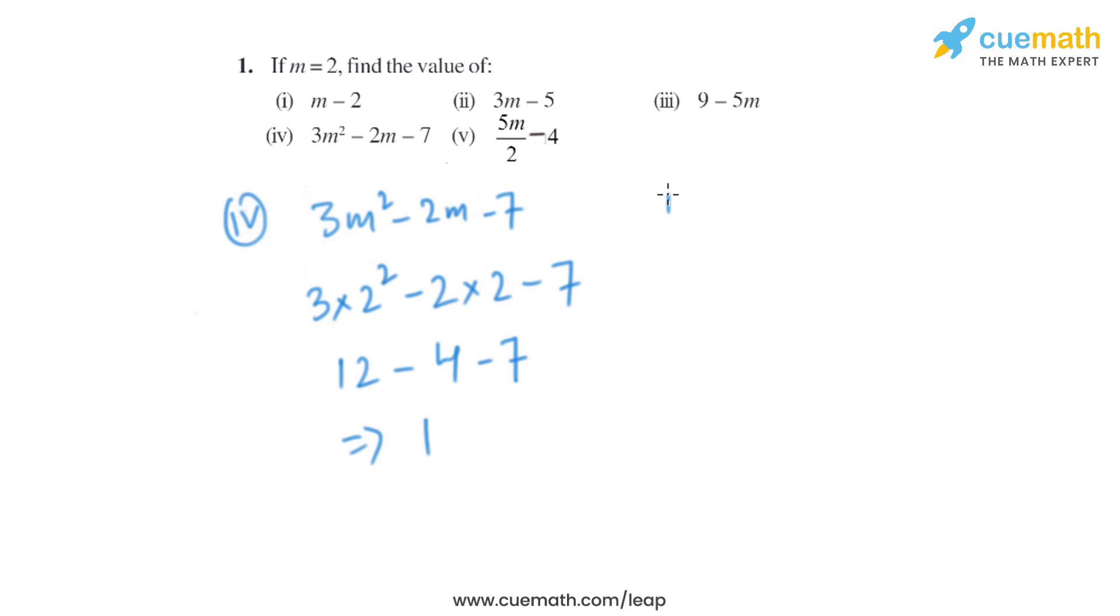Now let's move on to the fifth part. The expression that is given is 5m by 2 minus 4. If we put the value of m equals to 2, it will be 5 into 2 by 2 minus 4.